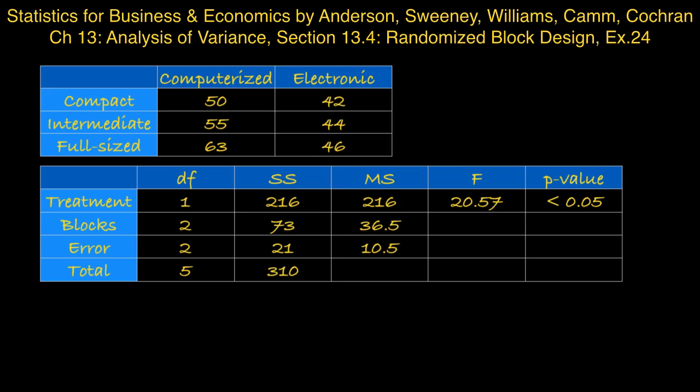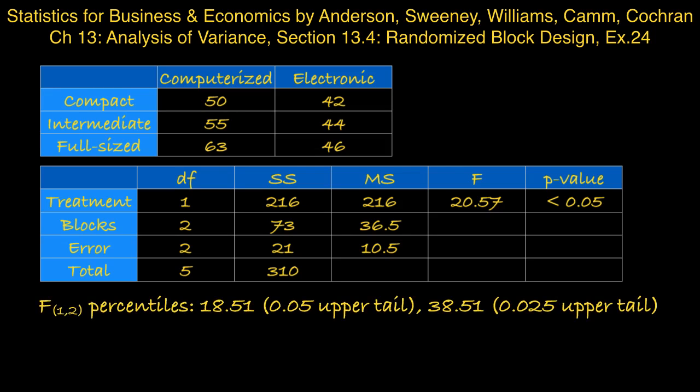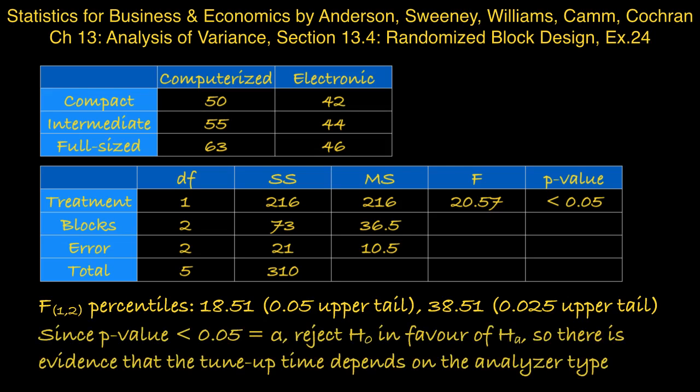And to find the p-value, we need to look up an F distribution table. An F distribution with one numerator degrees of freedom, two denominator degrees of freedom. And 18.51 has a 0.05 upper tail. 38.51 has a 0.025 upper tail. Our F statistic comes in between 18.51 and 38.51. So the p-value must come in between 0.025 and 0.05. Since we're doing a test at alpha 0.05, all we really need to know is that the p-value is less than 0.05. So therefore we reject the null in favor of the alternative. So there is evidence that the tune-up time depends on the analyzer type.